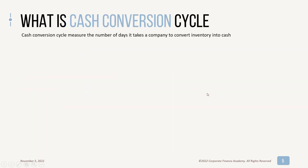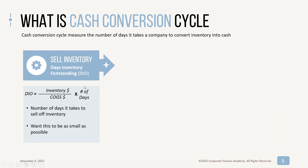So what is the cash conversion cycle? It's really the number of days it takes a company to convert inventory into cash. The way it's measured is first by looking at how long it takes you to sell your inventory, and this is measured by days inventory outstanding, or DIO. The formula is inventory divided by COGS times the number of days. This tells you the number of days it takes to sell off your inventory, and you want this number to be as small as possible.